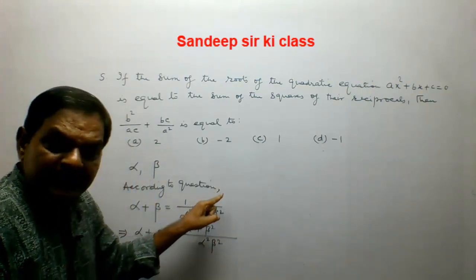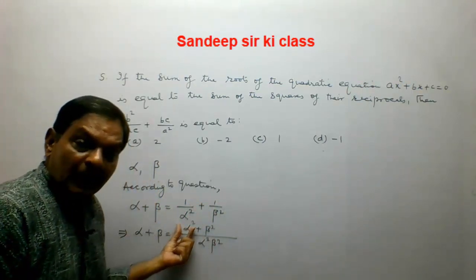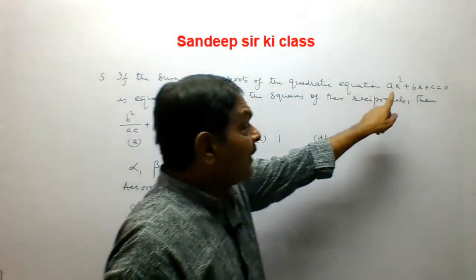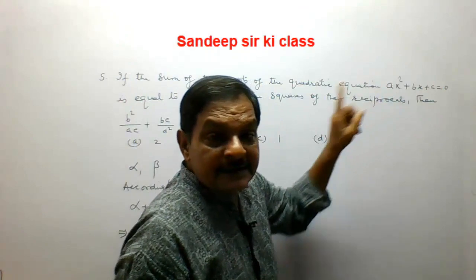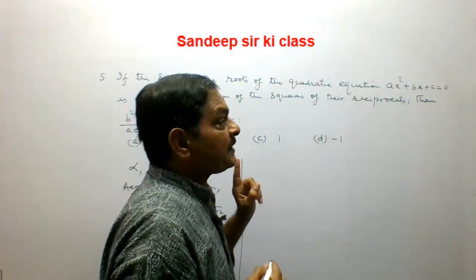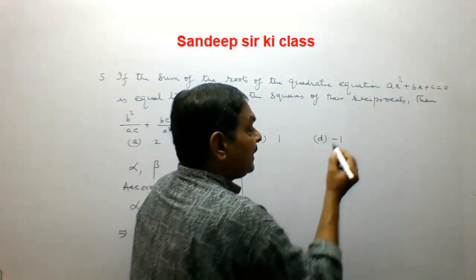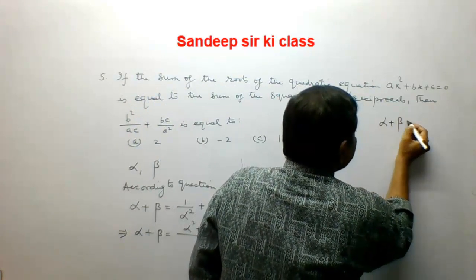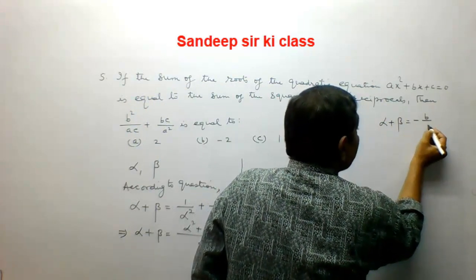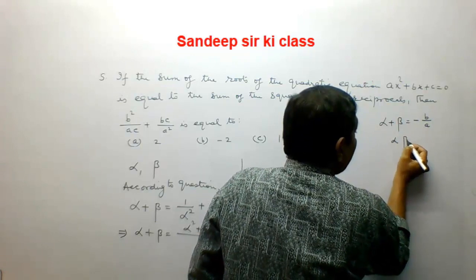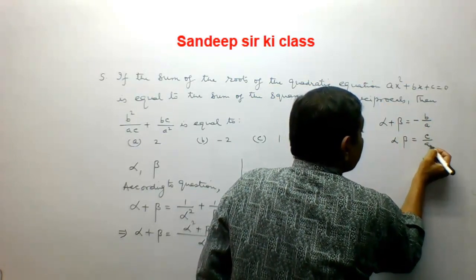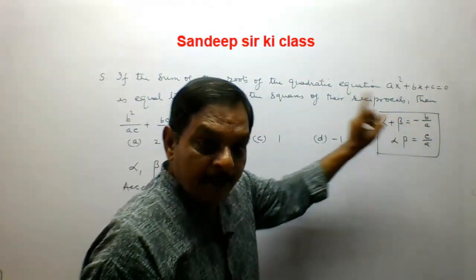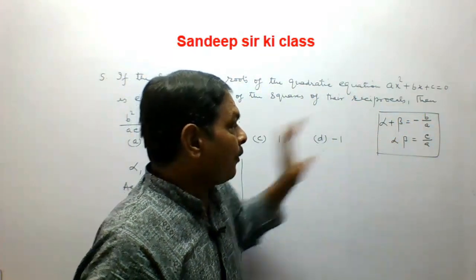So alpha + beta = (α² + β²) / (α²β²). Now, for the equation ax² + bx + c = 0, we know that alpha + beta = -b/a and alpha·beta = c/a. These are the standard Vieta's formulas: the sum of roots is -b/a and the product of roots is c/a.